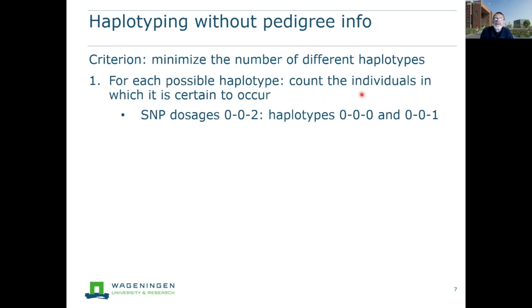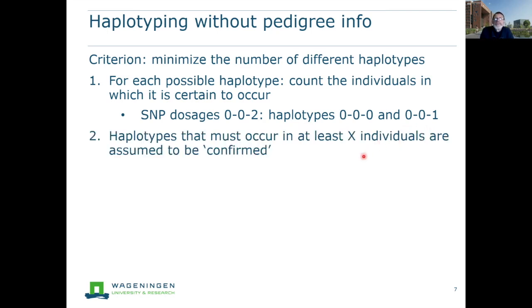For instance, if the SNP dosages for the three SNPs in our haploblock are 0, 0, and 2, then we know for sure that the haplotypes 0,0,0 and 0,0,1 must occur in this individual — excluding dosage errors. We set a threshold — a minimum number of individuals where a haplotype must be present — and if this number is large enough, we say that haplotype is confirmed to be present in the population. This is the first step.